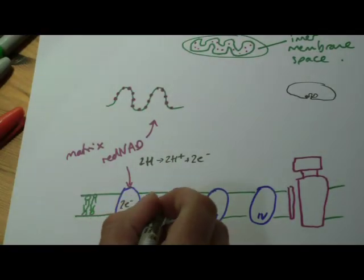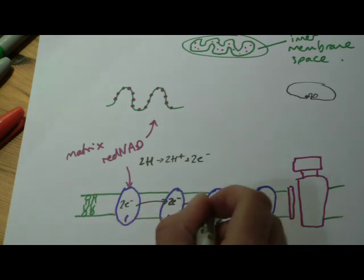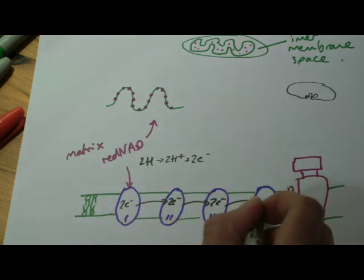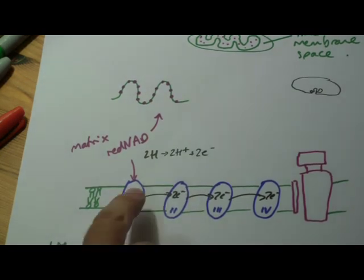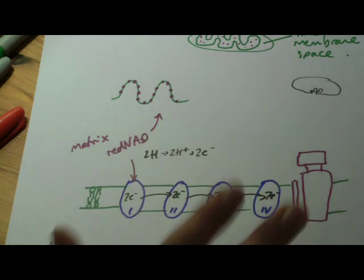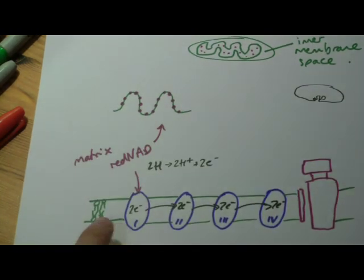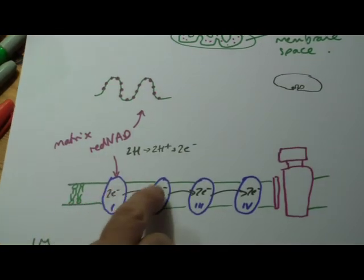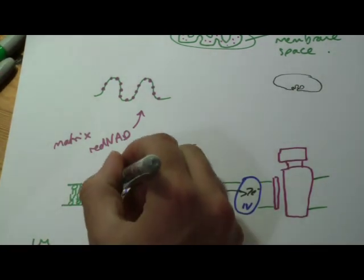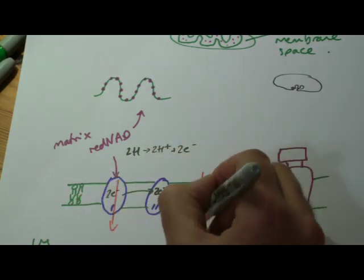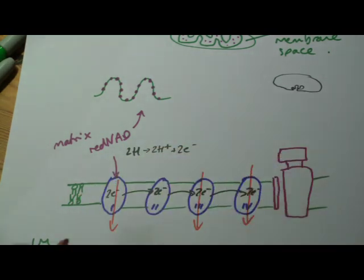So these electrons are then passed from one complex to the other. Now the way it shows you in the book it looks like they just kind of magically jump across, they don't. There are other molecules involved in transporting these, but you don't need to worry what they are. All we need to think is that every time these are passed on, some energy is released.